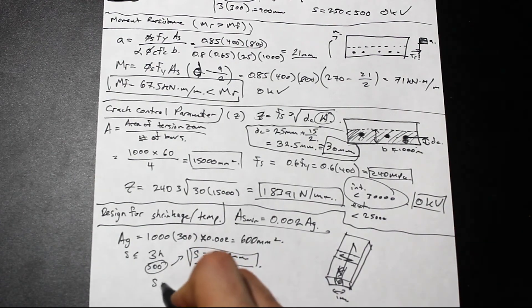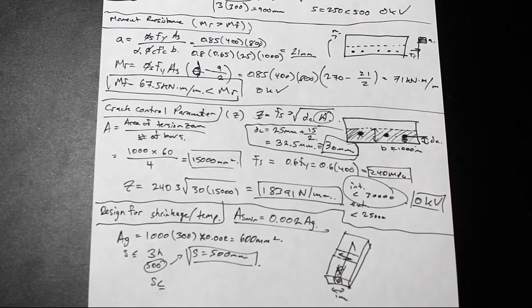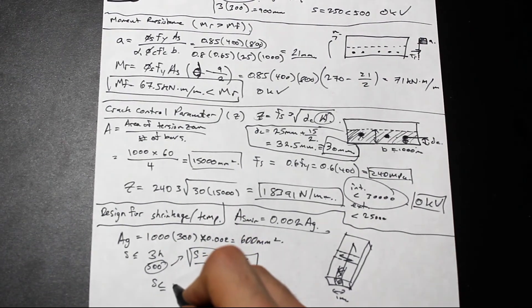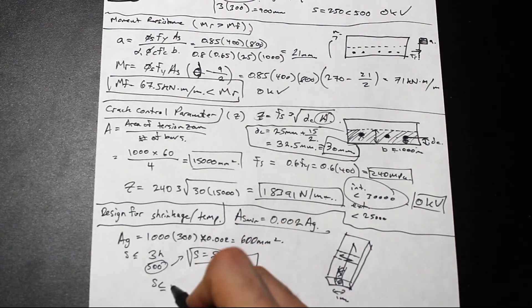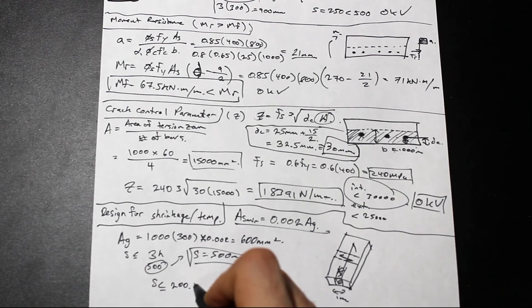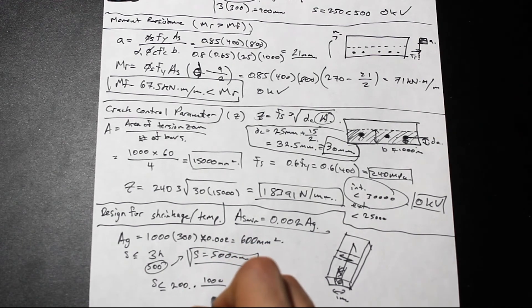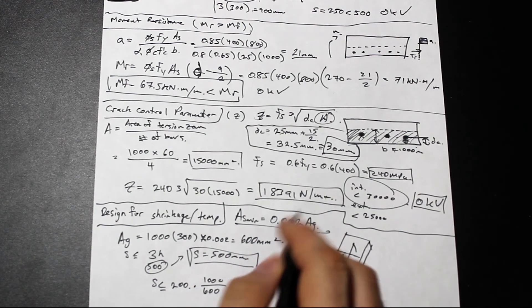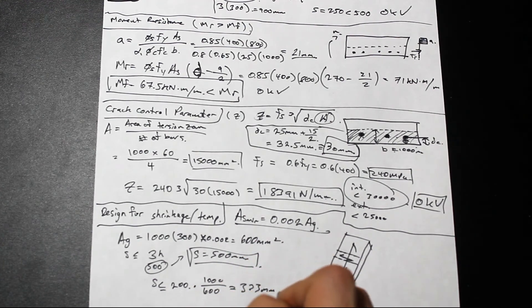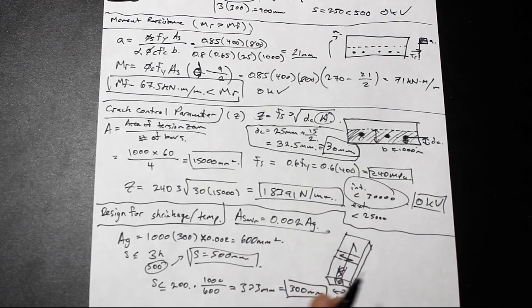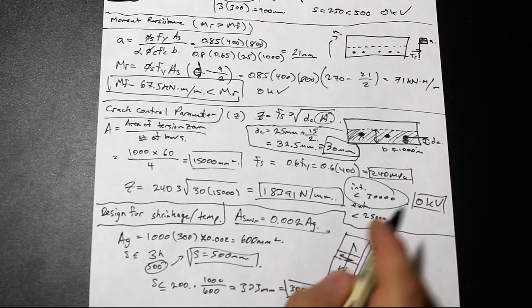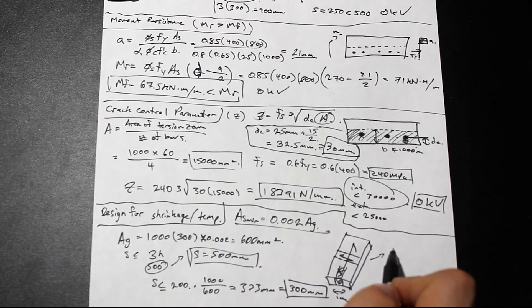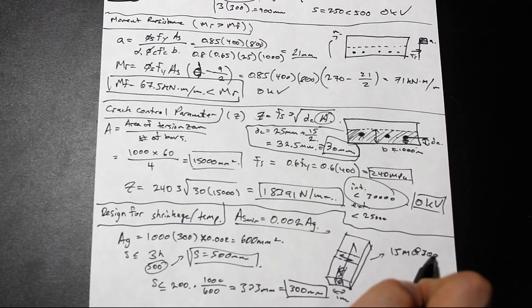This is the maximum. Let's find the actual reinforcement required. S, the spacing, and we're using 15M again, so we have 200 millimeters per bar. That's going to be times B, which is 1,000, divided by the required amount of steel, 600. We're going to get a spacing of 333 millimeters. Let's just say for construction's sake, spacing at 300 millimeters. So for shrinkage reinforcement, we're going to provide 15M at 300 millimeter.